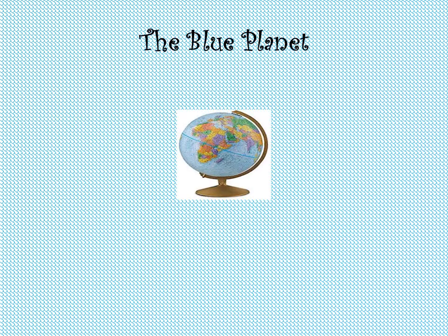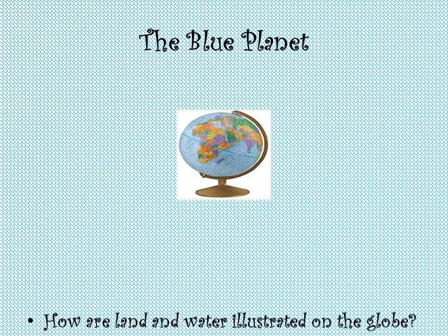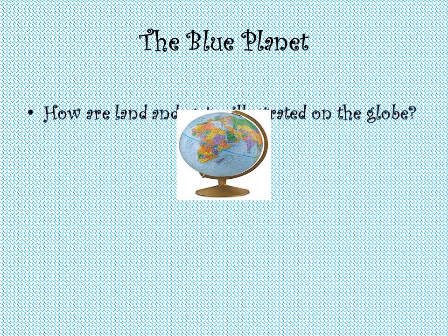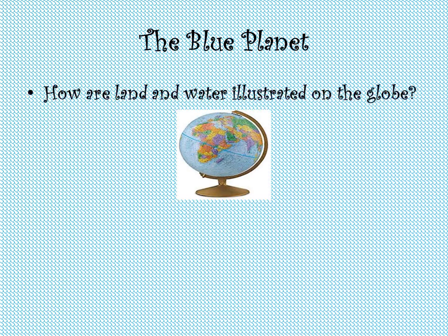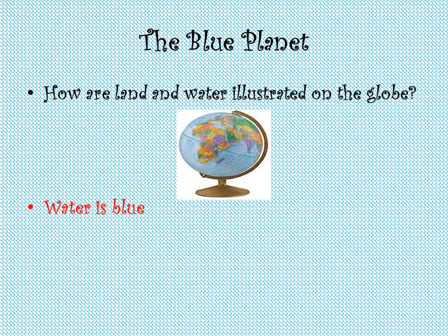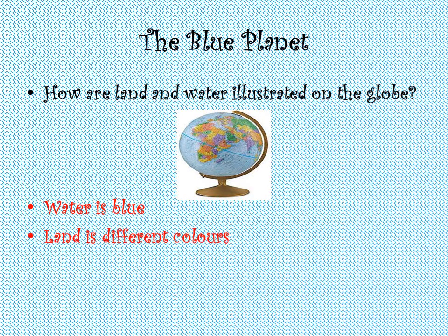The Blue Planet: How are land and water illustrated on the globe? Water is blue. Land is different colours.